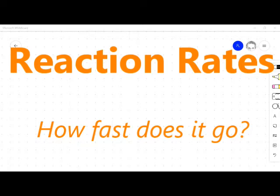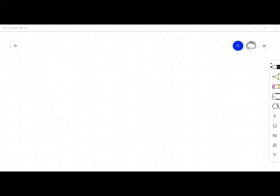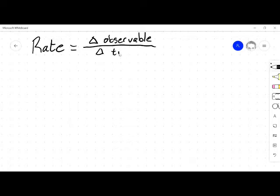Let's start by looking at rates specifically. When we're talking about rate, a rate is really just a change in an observable over a change in time, and that observable can be a lot of things.